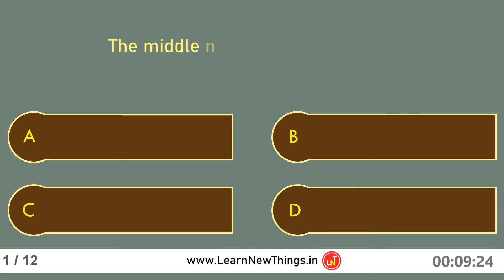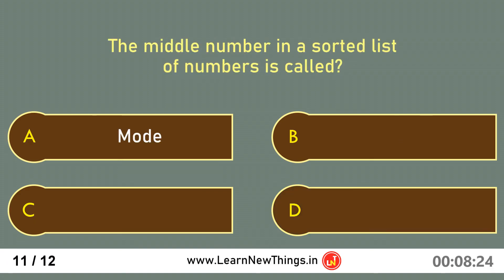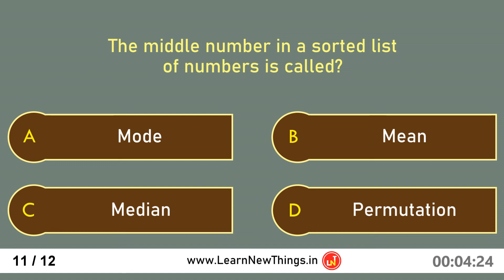The middle number in a sorted list of numbers is called the median.